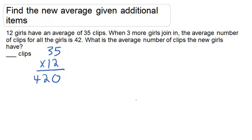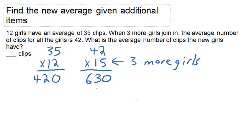When 3 more girls join in, the average number of clips for all the girls is 42. So in this case, 42 times 15, because that's 3 more girls from 12, gives us a total of 630 clips.